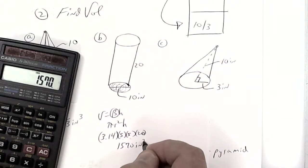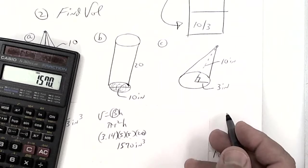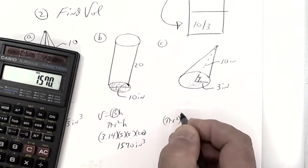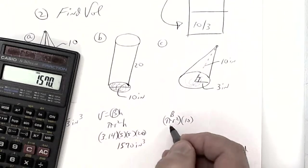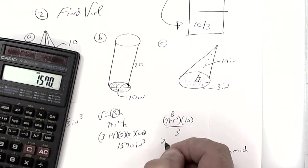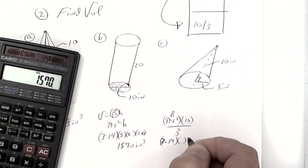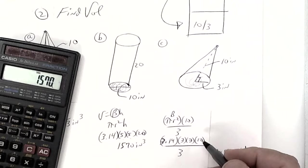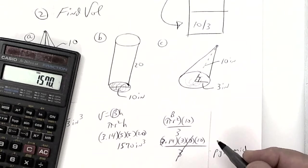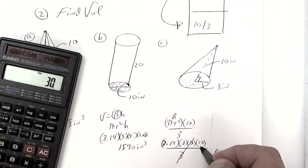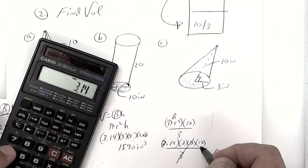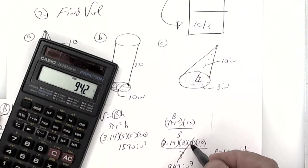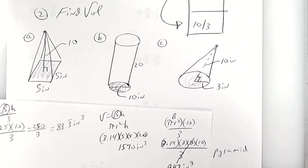The last one is a cone. The bottom is a circle, so put π × radius² for B, times the height, and since it comes to a point you divide by 3. So it's 3.14 times the radius — 3 × 3 — times the height, then divide by 3. You can cancel that 3, leaving 3 × 10 = 30, times 3.14, which gives 942 cubic inches. You can reduce a top number and a bottom number when you're multiplying.